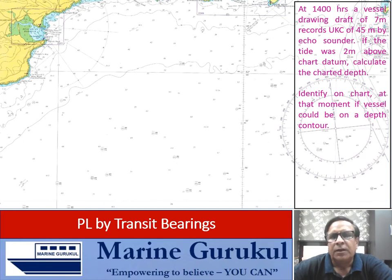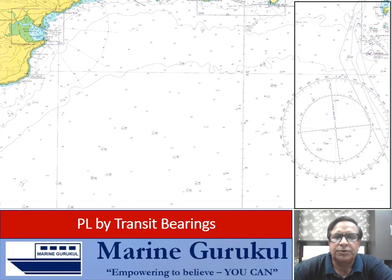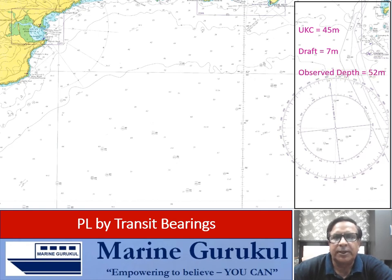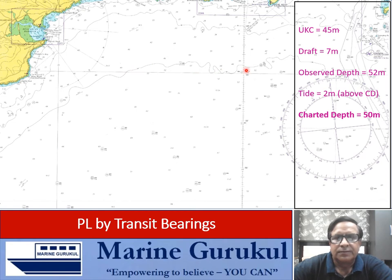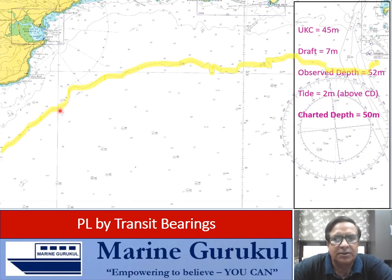To convert to charted depth: UKC 45 m + draft 7 m = observed depth of 52 m. Tide is 2 m above chart datum, so charted depth = 52 − 2 = 50 m. On the chart, the 50 m depth contour is identified (shown highlighted in yellow). Since the charted depth at that moment is 50 m, the vessel is somewhere on this depth contour, and this contour now acts as the position line.